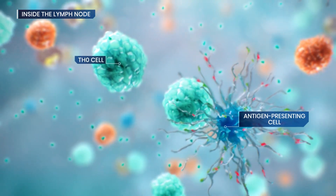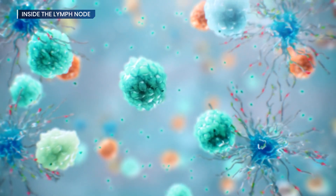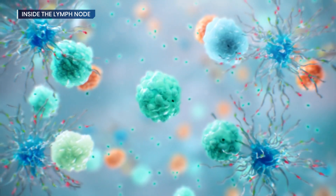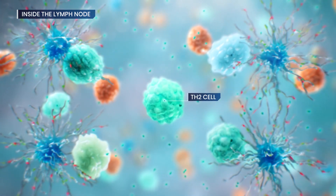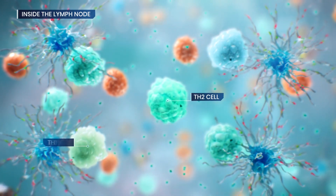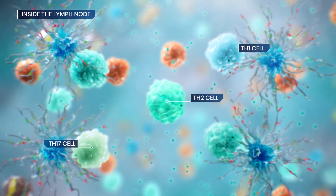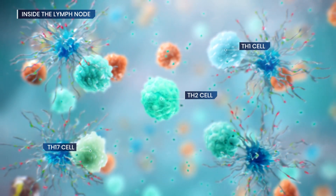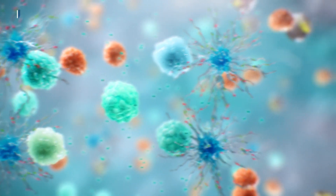Activated T cells differentiate primarily into TH-2 cells, driven by cytokines such as IL-4, and are the main pathogenic subset. TH-17 and TH-1 cells are also involved in this process.